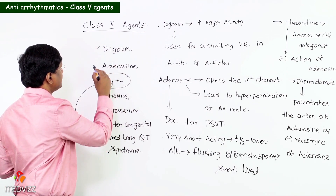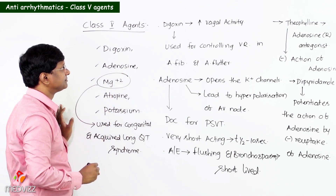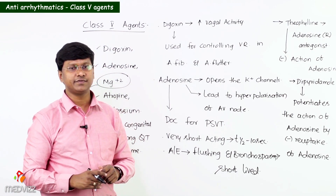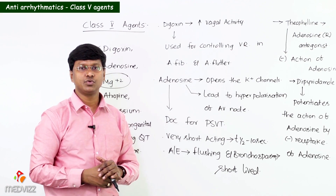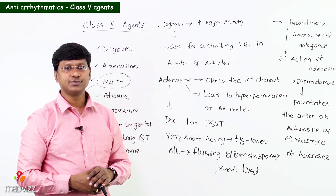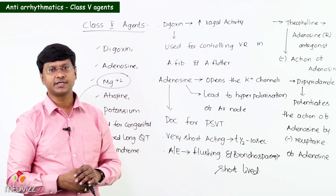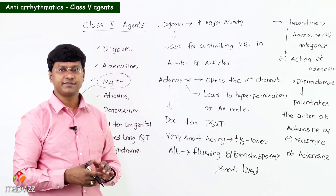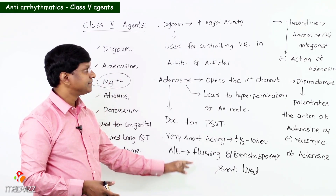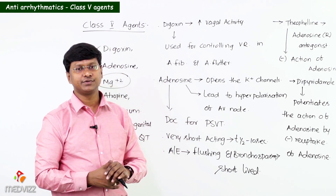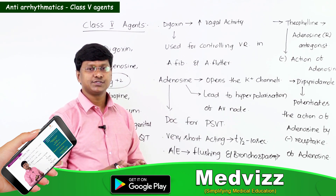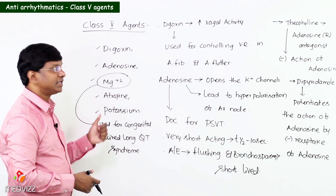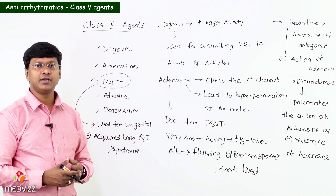To revise: Class 5 agents include digoxin, adenosine, magnesium, atropine, and potassium. Digoxin increases vagal activity and controls ventricular rate in atrial fibrillation and flutter. Adenosine opens potassium channels, causes hyperpolarization of the AV node, and is the drug of choice for PSVT with a half-life of 10 seconds. Theophylline inhibits adenosine action; dipyridamole potentiates it by inhibiting reuptake. Magnesium is used for congenital and acquired long QT syndrome.